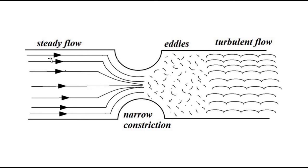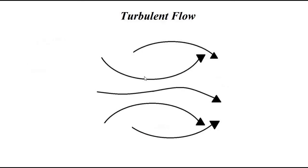The best way to visualize turbulent flow is letting a liquid pass through a narrow constriction or obstruction. Just before the constriction the liquid flows in well-defined paths with fixed velocities — well organized. But just as it passes through this narrow constriction it forms whirlpools or eddies, and at a little distance away the flow becomes turbulent — disorganized, random speed and directions.